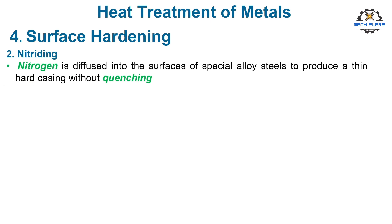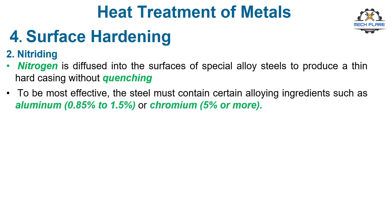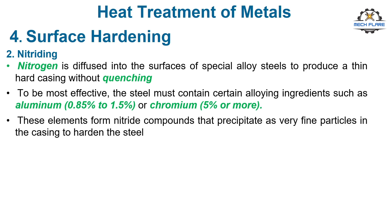In nitriding, nitrogen is diffused into the surfaces of special alloy steels to produce a thin, hard casing without quenching. To be most effective, the steel must contain certain alloying ingredients such as aluminum (0.85% to 1.5%) or chromium (5% or more). These elements form nitride compounds that precipitate as very fine particles in the casing to harden the steel.